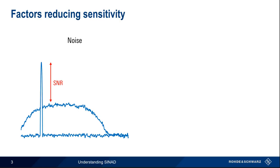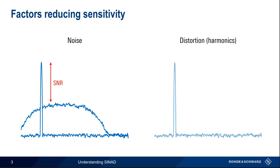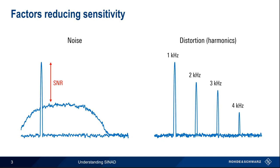In addition to noise, the other main factor affecting receiver sensitivity is the presence of distortion, often in the form of harmonics. Harmonics are copies of a signal appearing at integer multiples of that signal's frequency. For example, if our fundamental signal is at 1000 Hz, harmonics will appear at 2000 Hz, 3000 Hz, 4000 Hz, etc. Harmonics and other types of distortion are not uncommon, so when measuring receiver sensitivity, it's important to consider the effect of both noise and distortion.